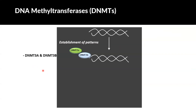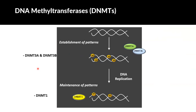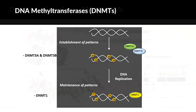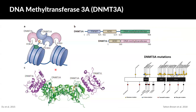DNMT3A and DNMT3B are the ones that establish the patterns of DNA methylation, or de novo methylation. While DNMT1 is the one that will maintain those patterns through cell cycles. DNMT3A works with another DNMT called DNMT3L, and they form a large complex to bind DNA and add methyl groups. So we can easily imagine how any mutation in DNMT3A or DNMT3L would affect how this complex is formed and how it binds DNA to methylate the DNA.